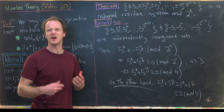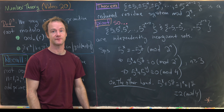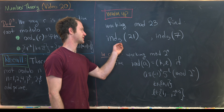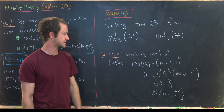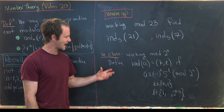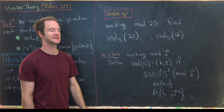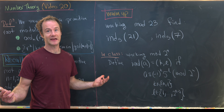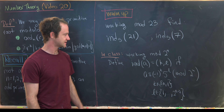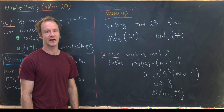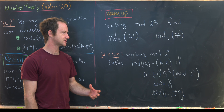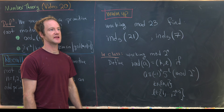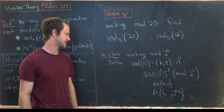Let's finish with a warm-up exercise. Working mod 23, find the index of 21 with respect to 5 and the index of 7 with respect to 5. This is a nice exploratory exercise for building intuition about the index.